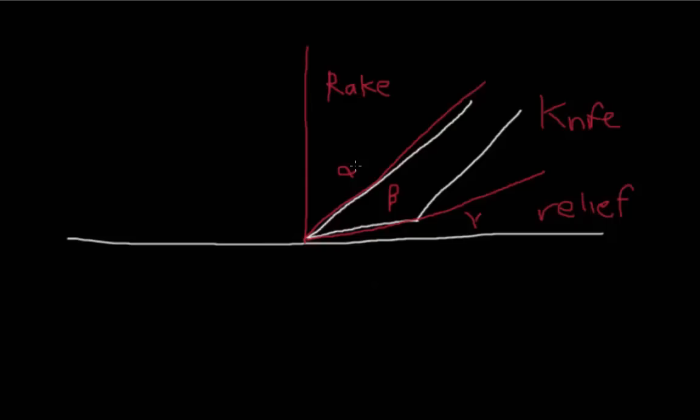A larger rake angle will result in a sharper cutting tool, but as it gets sharper it will also be able to penetrate more easily and that also makes the tool a little more fragile because if it gets sharper it's basically going to be thinner as a tool itself.